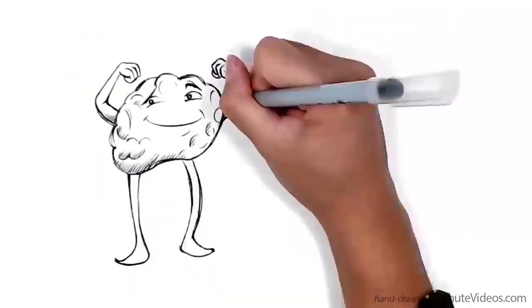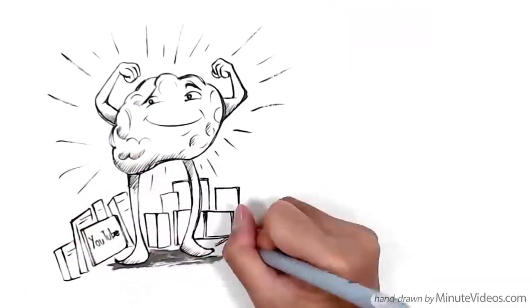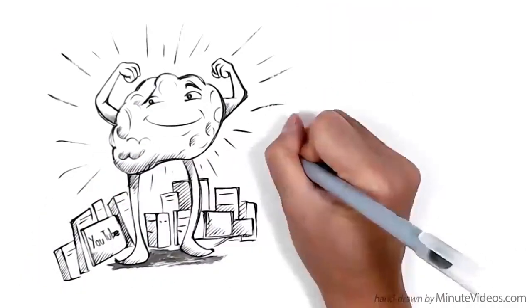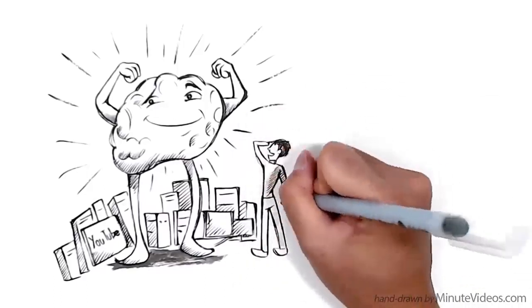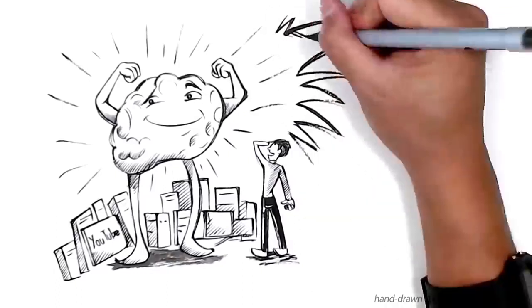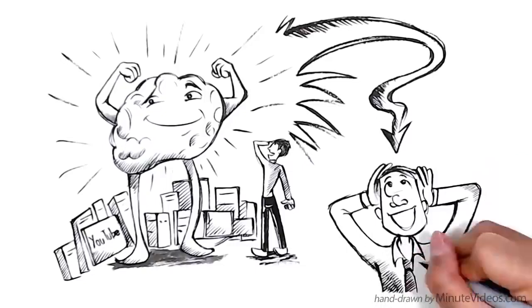Our brain can potentially memorize 2.5 petabytes of information, which is roughly the equivalent of 3 million hours of YouTube videos. In order to use some of that staggering capacity a little more effectively when you learn, here are some tips that are based on widely accepted research by neuroscientists and learning experts.